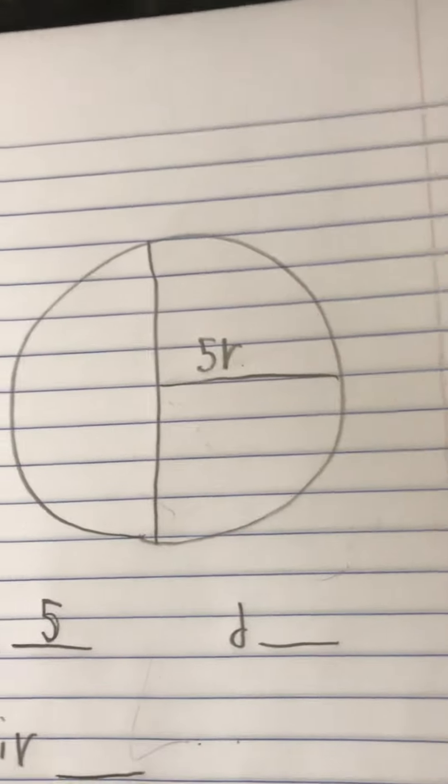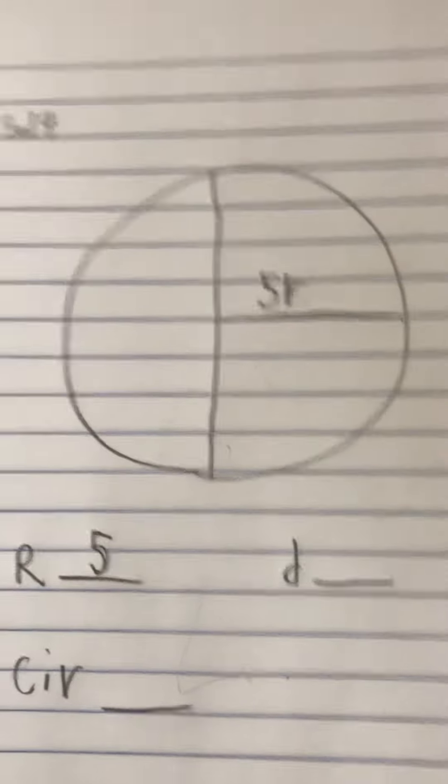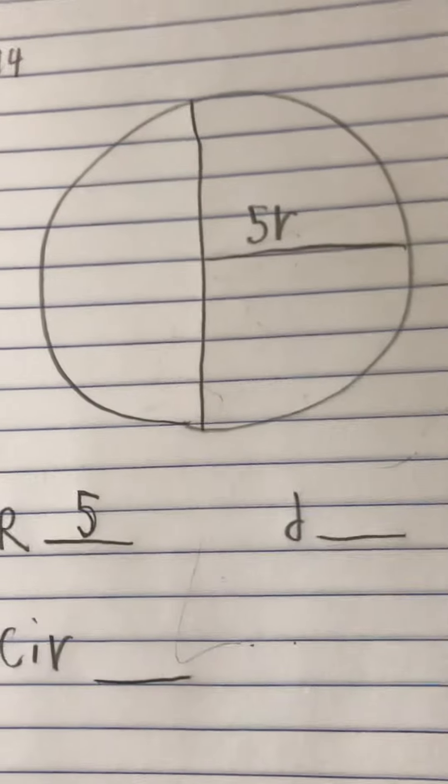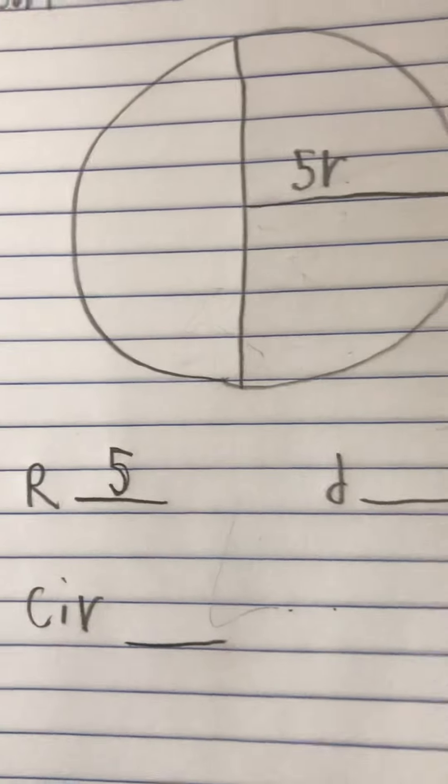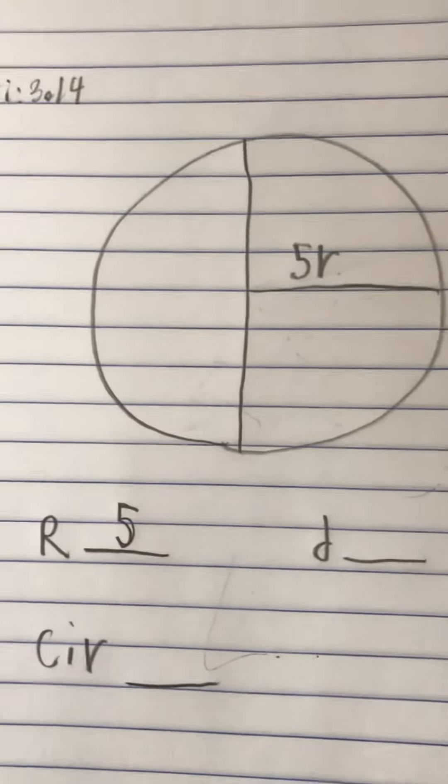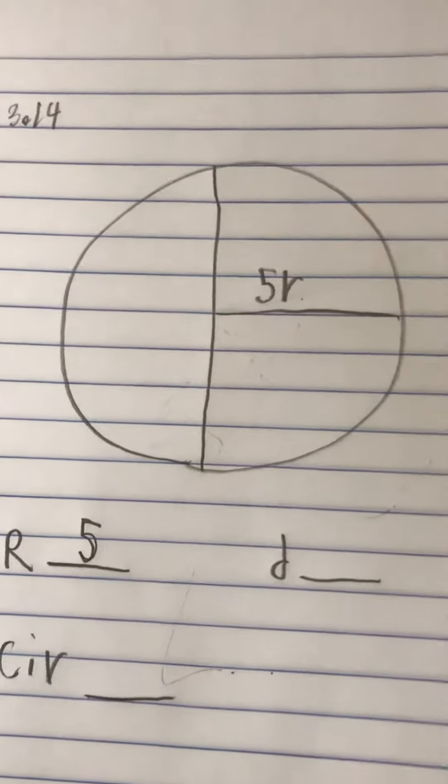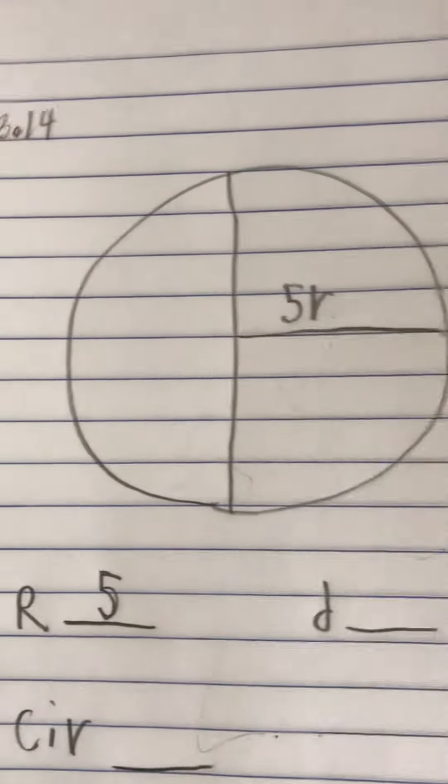If we're finding the diameter, then the expression would be D. If D is diameter and R is radius, then the expression would be D equals R times 2.